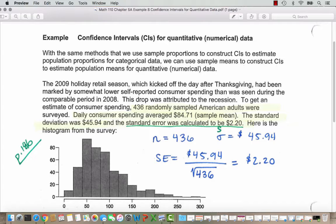To get an estimate of consumer spending, 436 randomly sampled American adults were surveyed. Daily consumer spending averaged $84.71, so that's our sample mean. The standard deviation was $45.94, and the standard error was calculated to be $2.20. Here's the histogram from this survey.